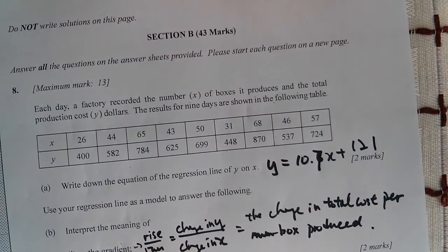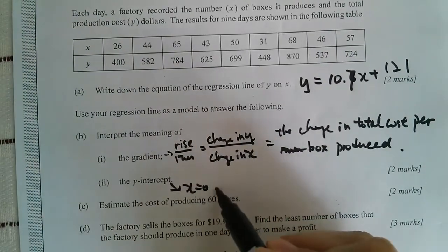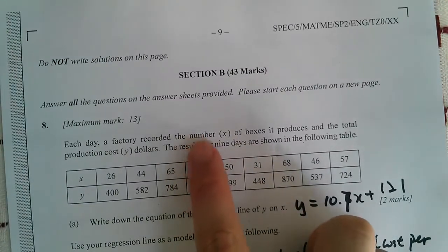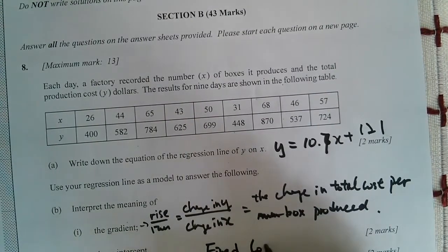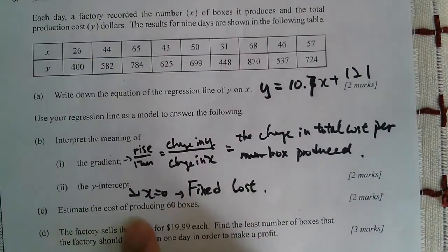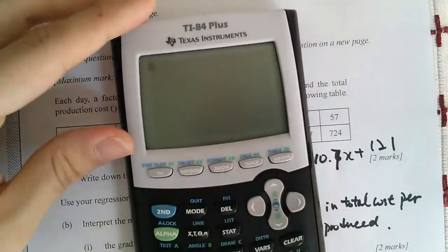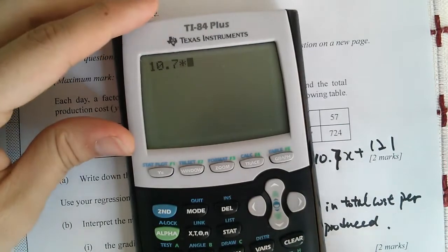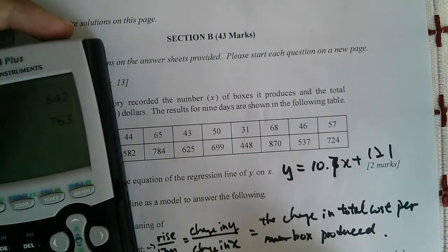What is the y-intercept? How do we usually find y-intercept? We find y-intercept by considering when x equals zero. When x equals zero, that means you produce zero boxes, so you do nothing. When you do nothing there is still some cost, the cost is still 122. So we usually call it the fixed cost. Even if you do nothing you're gonna spend this, so we call this the fixed cost. Estimate the cost of producing 60 boxes. That's pretty easy, we just plug x being 60: 10.7 times 60 plus 121 equals 763.